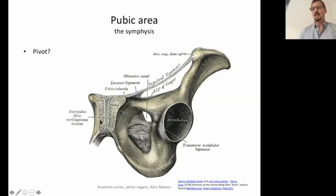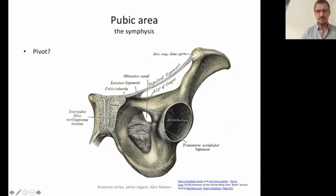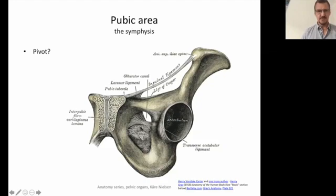We often talk about the pubic bone as a pivot for iliosacral motion. Whenever you move — walk, dance, cycle — you pivot around the anterior center point. Here we also have the superior ramus and the inferior ramus, the obturator canal with the membrane inside, and from here the inguinal canal. We stay a bit around this area for the pubic region in this presentation.